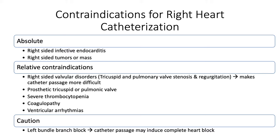Whether there is a true absolute contraindication to right heart catheterization is open to debate. Certainly if there is significant endocarditis, thrombus, or mass in the right heart, caution must be exercised. There are a number of relative contraindications; some may argue that a significant pulmonary embolism may be a contraindication, although measurement of PA pressure invasively can often be part of catheter-directed thrombolysis protocols.